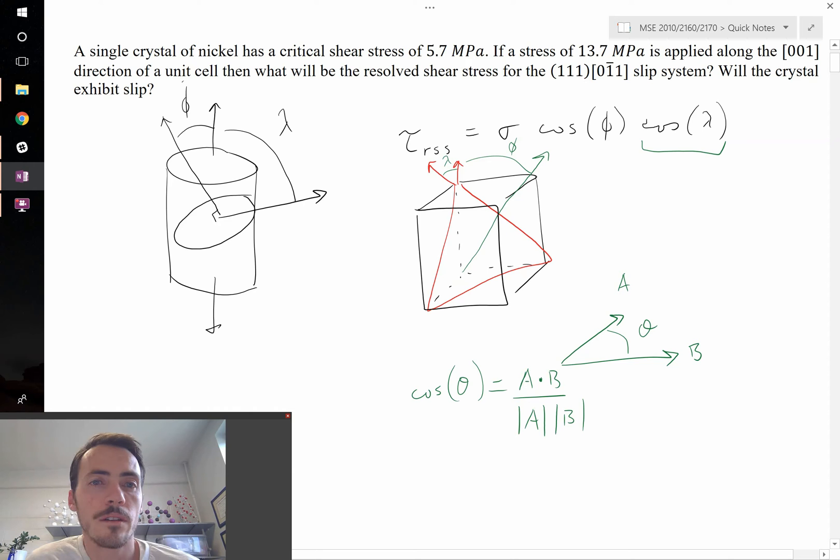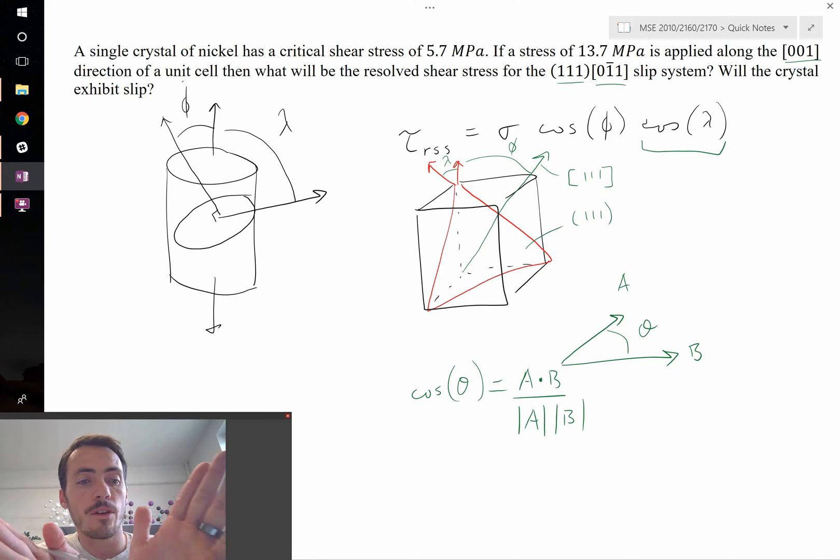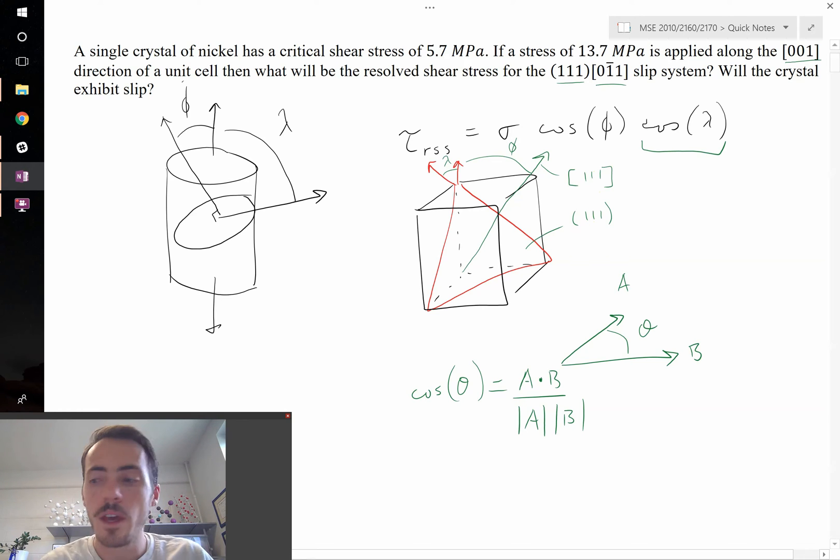Now that we know how to do that, let's go ahead and dive into this problem. We have our loading direction [001], our slip plane, and our slip direction. One additional thing to notice: I drew here the [111] direction, and that happens to be normal to the (111) plane, but that's only the case in cubic systems. If this was a non-cubic system, you would have to figure out what the normal is by picking two directions in the plane and taking their cross product. In this case, it's the same, so we can just use the [111].